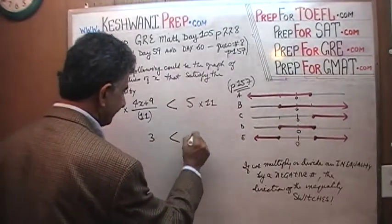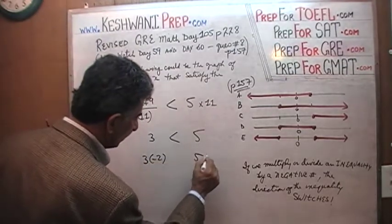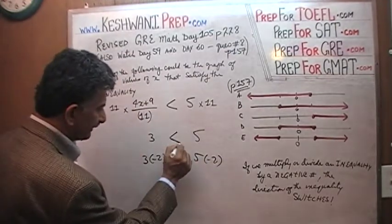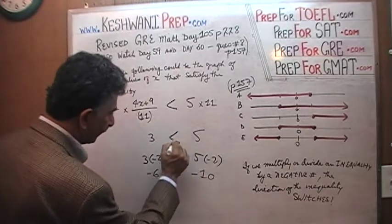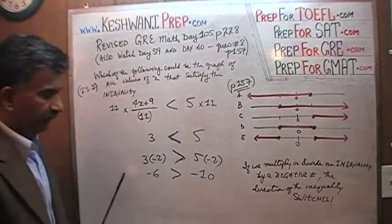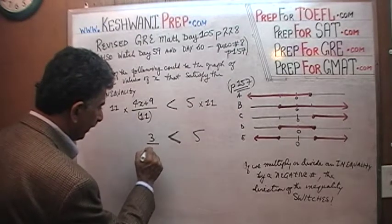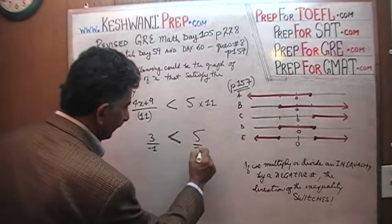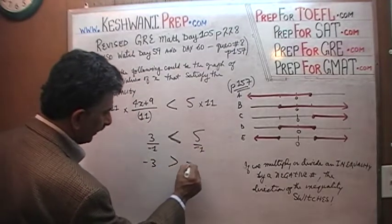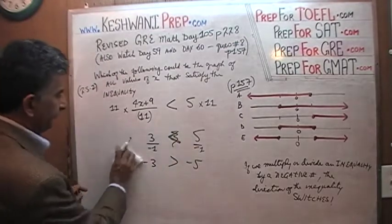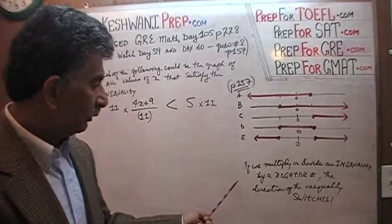3 is less than 5 — that's true. But if you take 3 and multiply by negative 2, and take 5 and multiply by negative 2, it should now say negative 6 is greater than negative 10. The direction switches: before it says less than, now it says greater than. Similarly, if you divide both sides by a negative number, it has to switch. 3 divided by negative 1 is negative 3, and negative 3 is in fact greater than negative 5.